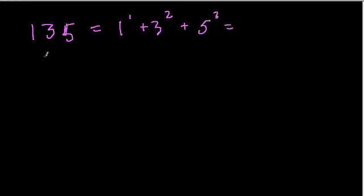And what I mean is, these things are equal. 1 to the 1st power is 1, 3 squared is 9, and 5 to the 3rd power is 125. Add all of these up, and you get 135.